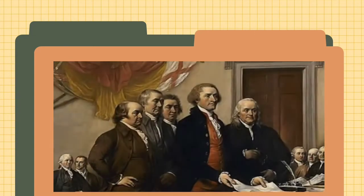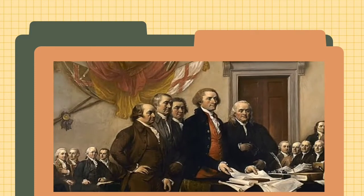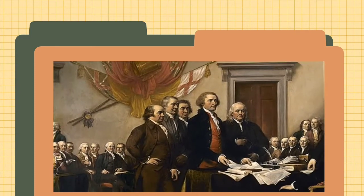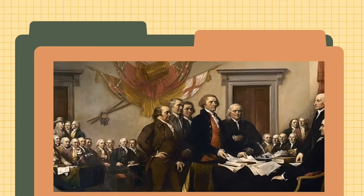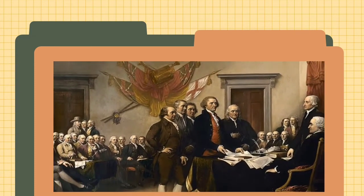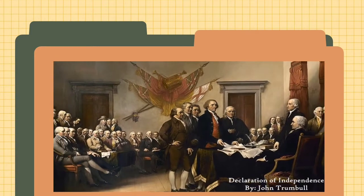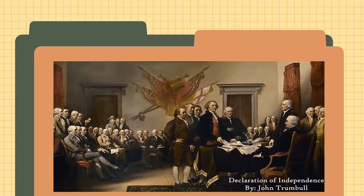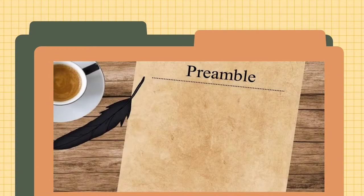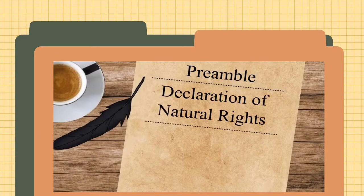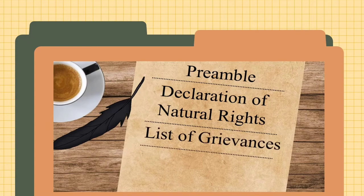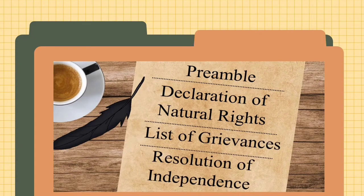Thomas Jefferson was the leader of the Committee and was the main author of the Declaration of Independence. He organized the document into different parts: the Preamble, the Declaration of Natural Rights, the List of Grievances, and the Resolution of Independence.